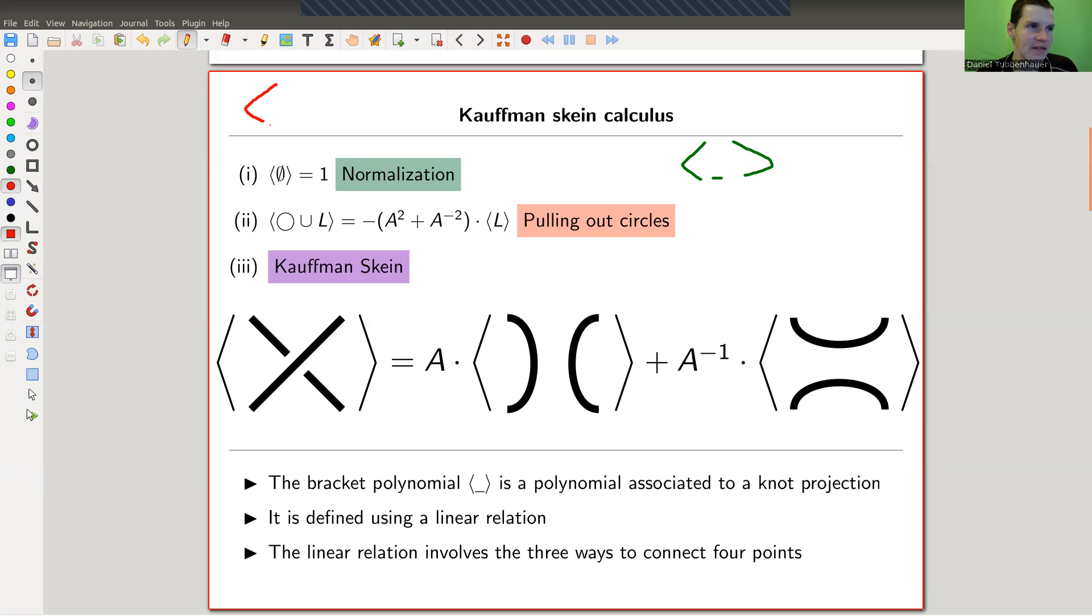I do it in the following way. So first I just say I have a normalization. I just say whenever I see something empty it should be one. I normalize empty knot to one. And my polynomial is now polynomial in the variable a. And the point is whenever I have a circle just sitting in my diagram, but it's not related to the knot at all, then I can just pull out the factor minus a squared plus a to the minus two. You remove the circle and you get a factor.